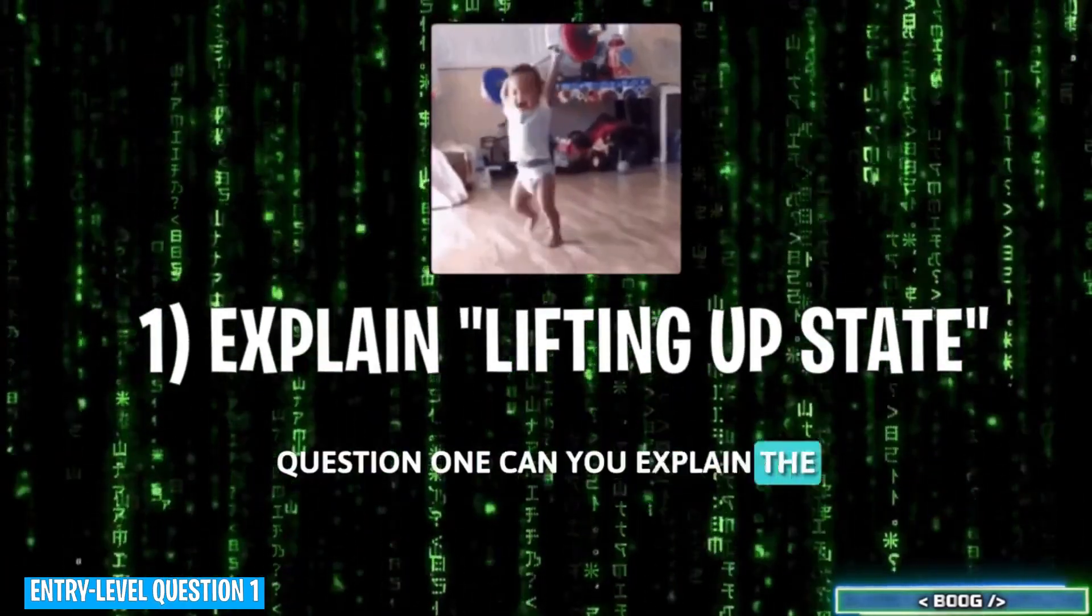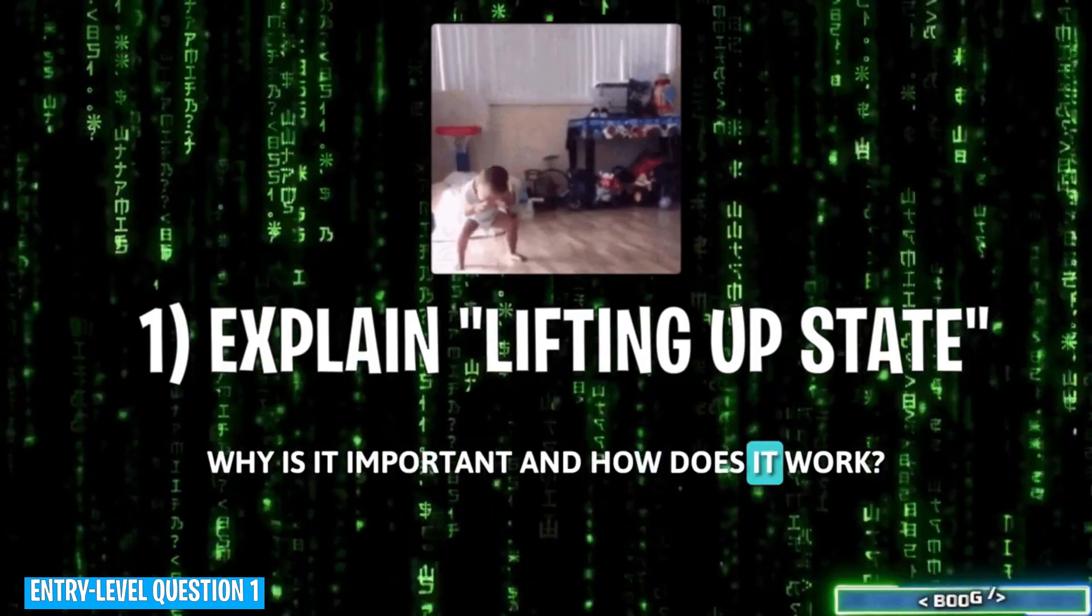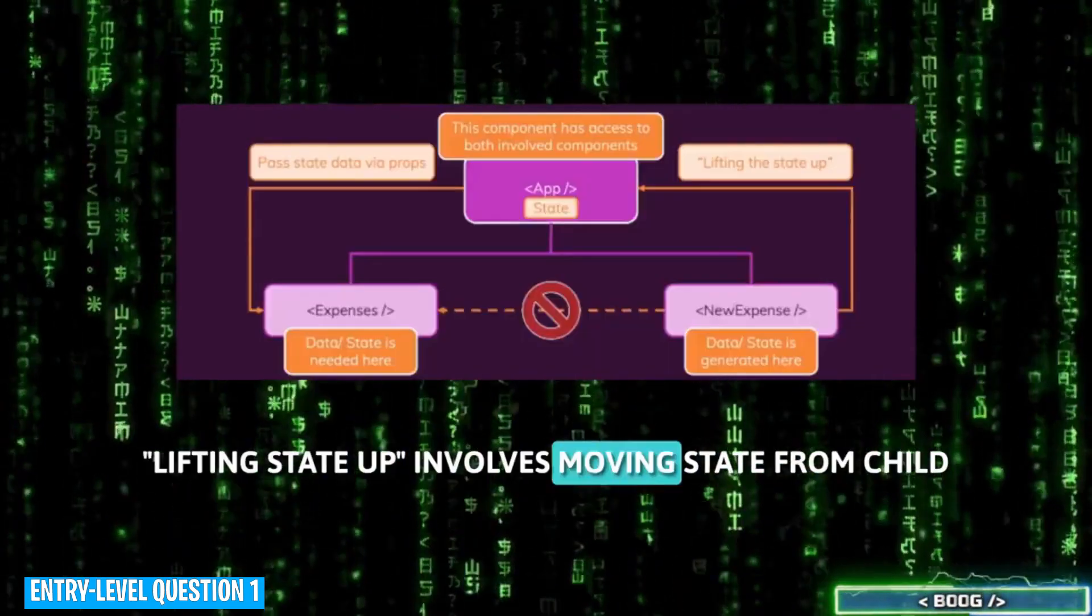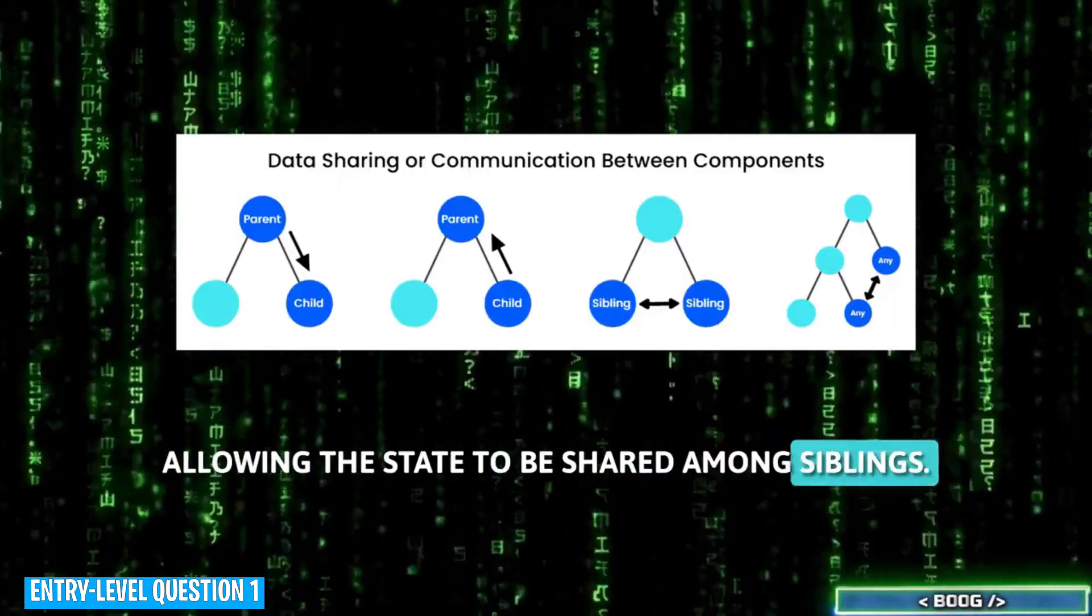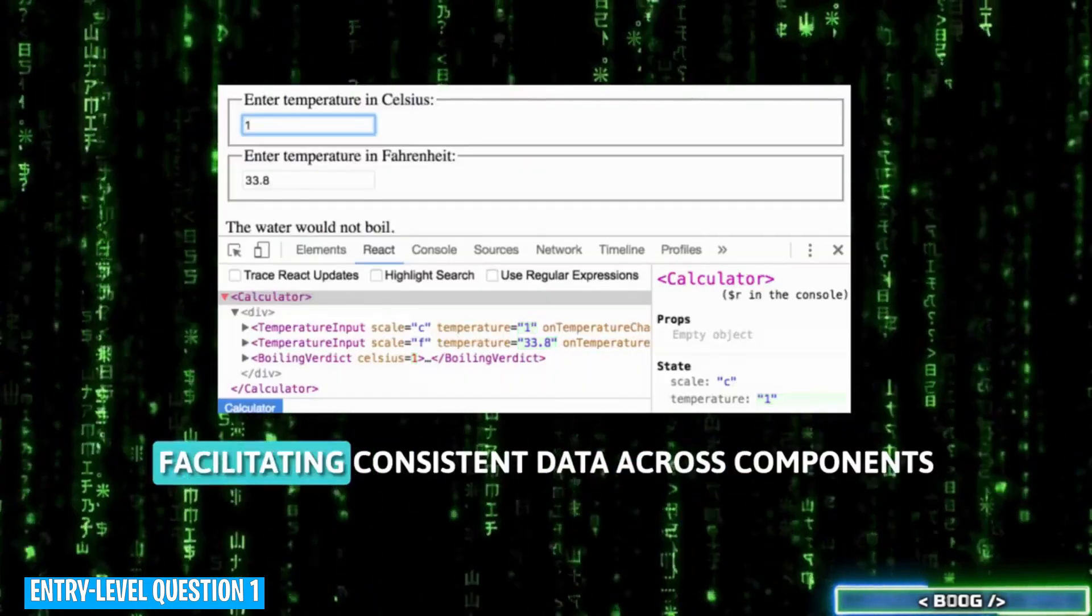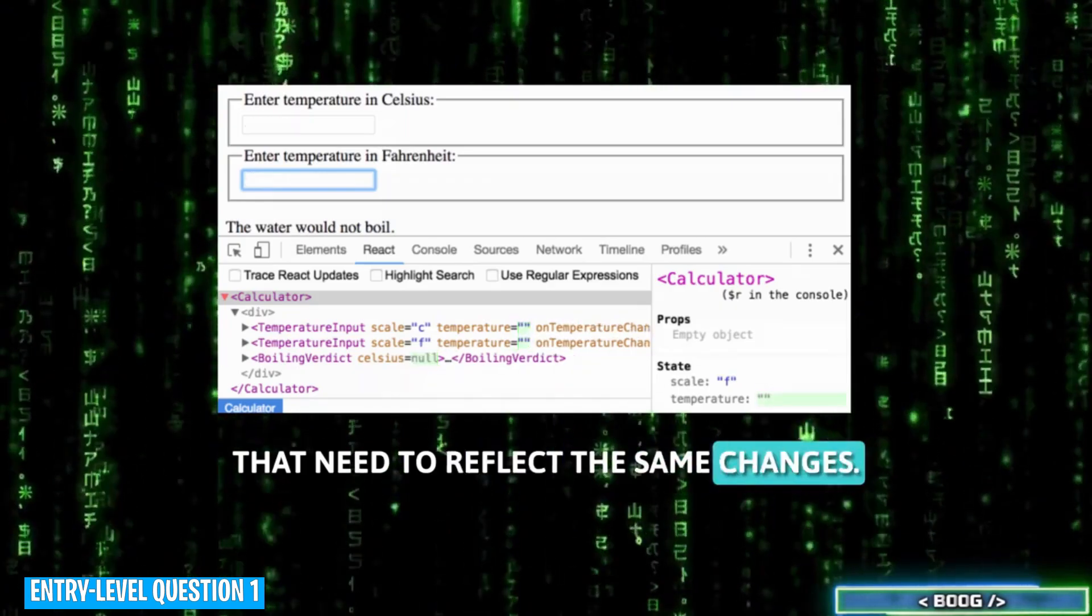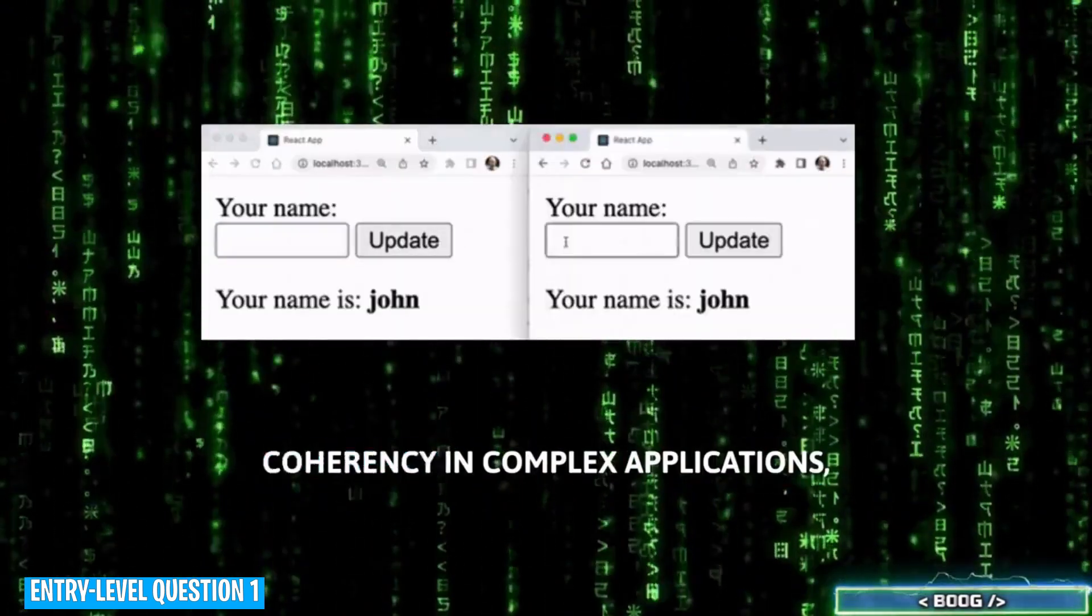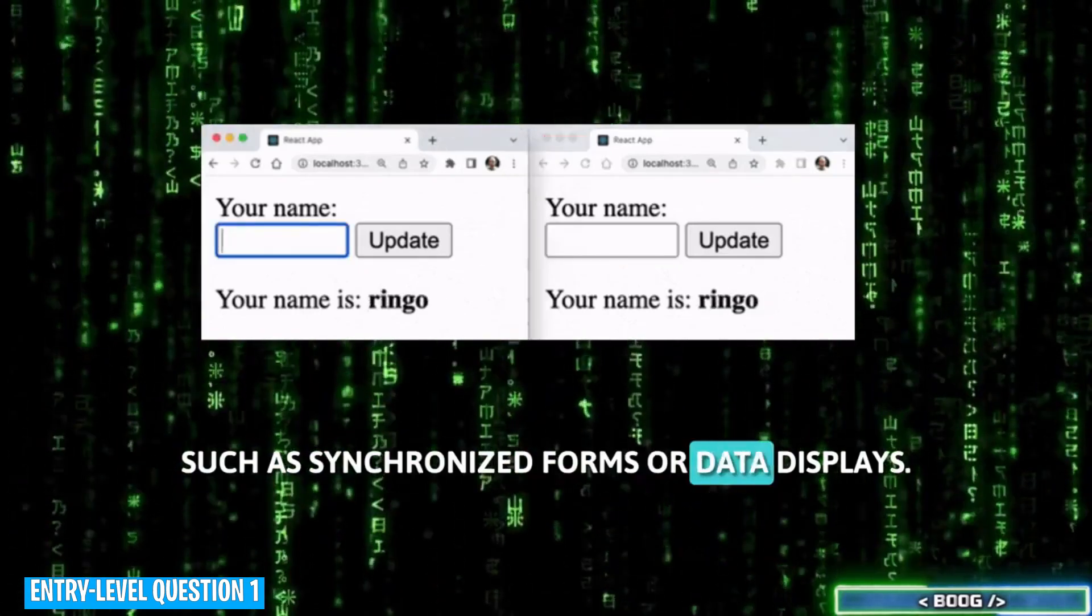Question 1. Can you explain the concept of lifting up state in React? Why is it important and how does it work? Lifting state up involves moving state from child components to their closest common ancestor, allowing the state to be shared among siblings. This technique ensures that the state is centralized and accessible, facilitating consistent data across components that need to reflect the same changes. It's essential for maintaining data coherency in complex applications, such as synchronized forms or data displays.